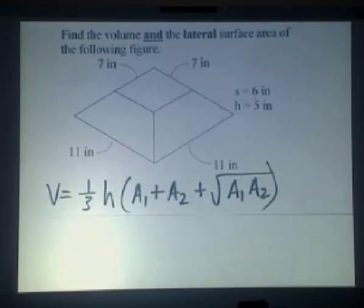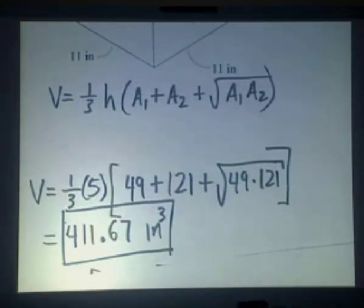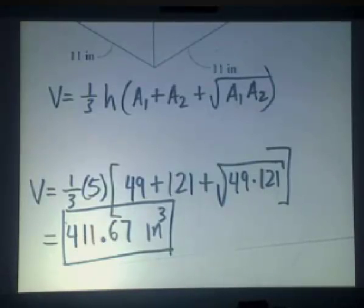So let's see how that appears once this is plugged into our formula. And we can see that that's been done for you right here. We have one-third times the height, which is five, times the quantity, forty-nine, and that's the area of the small base, plus 121, which is the area of the large base, plus the square root of the multiplication problem, forty-nine times 121. Carefully put this into your calculator, hammer that through, and round it to two decimal places. We come up with a value of 411.67 cubic inches.